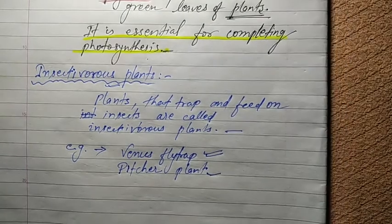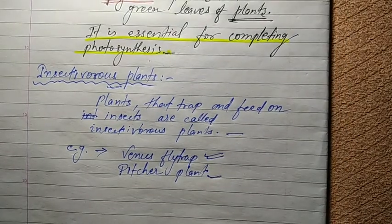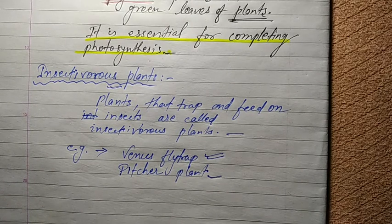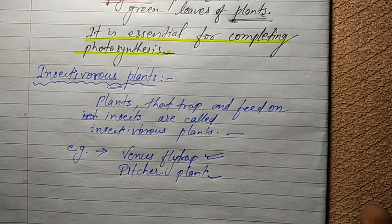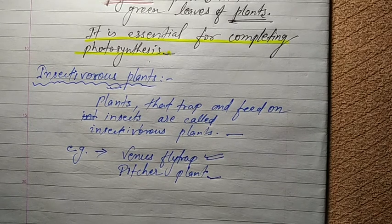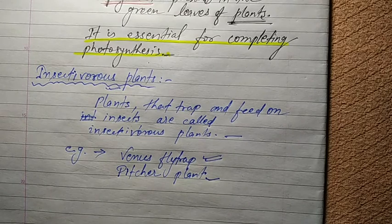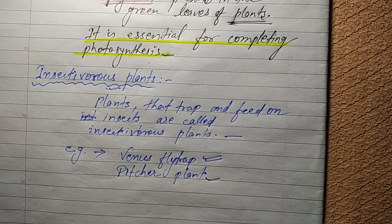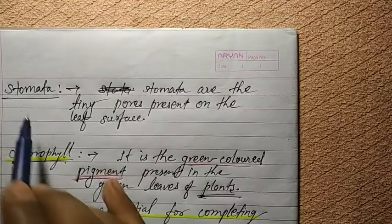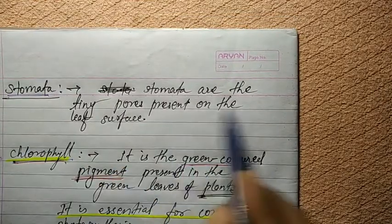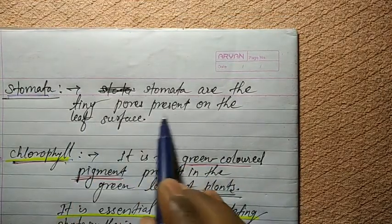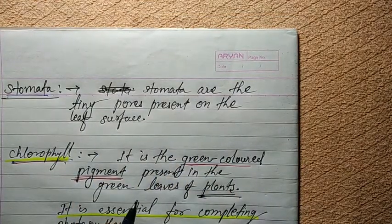So students, in this video we have studied about photosynthesis — the process by which plants prepare their food — and insectivorous plants, and some keywords: chlorophyll, and stomata — stomata are the tiny pores present on the leaf surface. Thank you students.